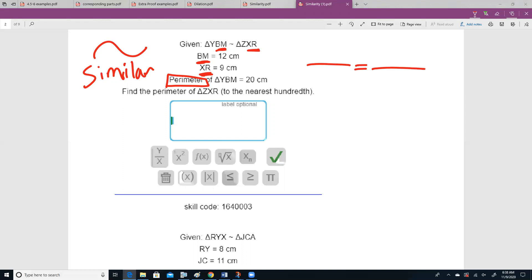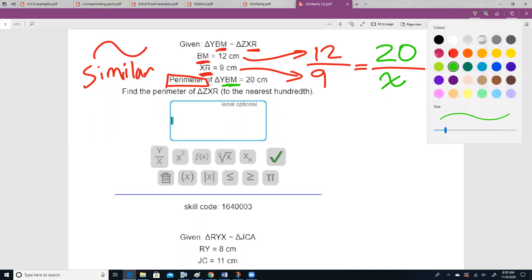So, if I have bm, I'm going to put that as 12 over 9. Now, bm is part of this bm y, or ybm, so if bm is on top, then that y bm is going to be on top of that perimeter. And we're going to solve for the perimeter of our other triangle. If you're looking at this, you're thinking, we can use cross multiplication.